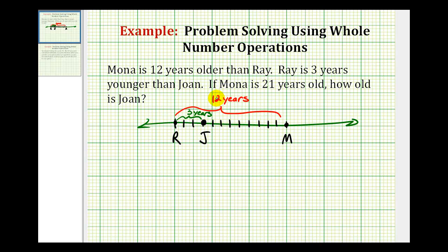The last sentence tells us if Mona is twenty-one years old, how old is Joan? So Mona is actually twenty-one years old. Well, if we want to determine the age of Ray, we'd have to take twenty-one and subtract twelve. So that means Ray would be nine years old.